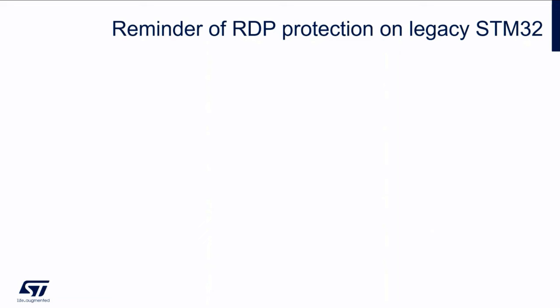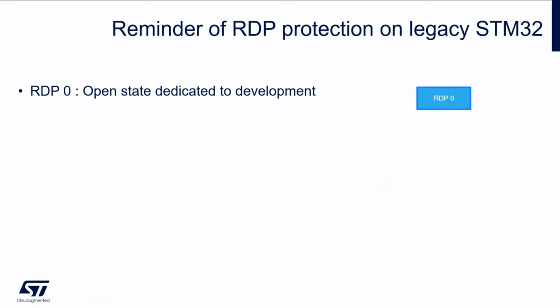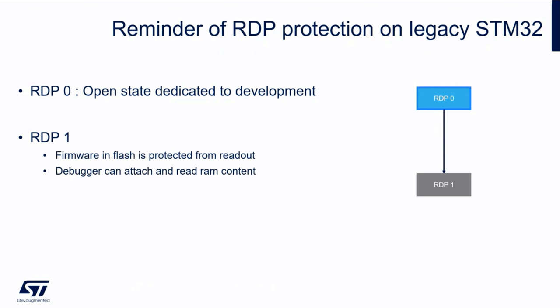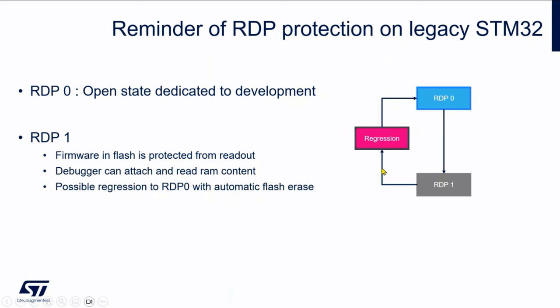First, a little reminder about RDP protection on our legacy STM32 — meaning all other STM32 basically. We have RDP level 0, which is the open state you get by default when you receive the device, and it is in this state that you work in development mode. Then you have RDP level 1 where the flash is protected against readout. The debugger can still attach and you can read the RAM content. You can then regress the device to RDP level 0, and the regression means that you erase all the content of the flash so that your code cannot leak.